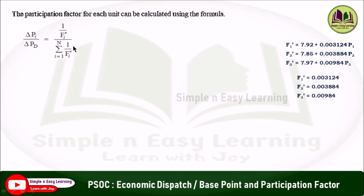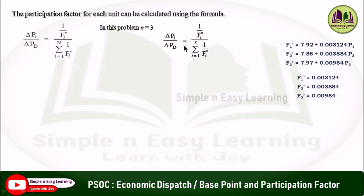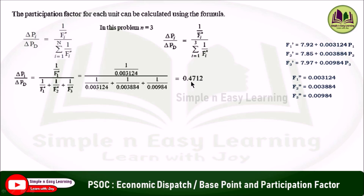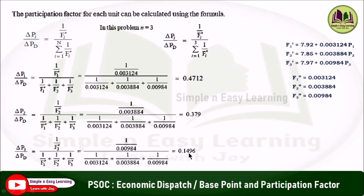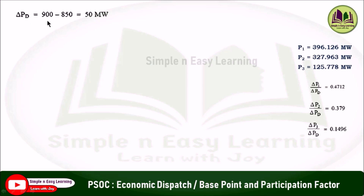The participation factor for each unit is: ∂Pi/∂Pd = (1/fi'') / (summation of 1/fi'' for i=1 to 3). For unit 1: ∂P1/∂Pd = (1/f1'') / (1/f1'' + 1/f2'' + 1/f3'') = 0.4712. Similarly, ∂P2/∂Pd = 0.379, and ∂P3/∂Pd = 0.1496.